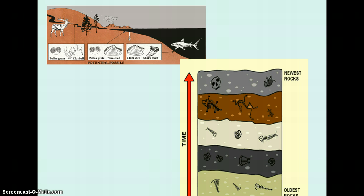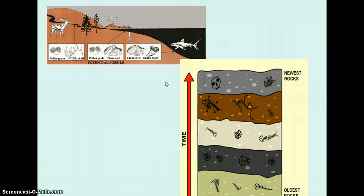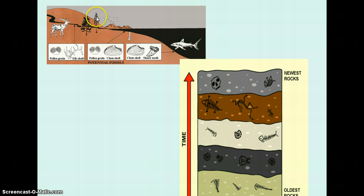These diagrams show that the deepest rocks have the oldest fossils, usually more simple than those closer to the surface. You can also use the type of fossils found to determine the environment at the time. For example, clamshells and shark teeth indicate a marine or coastal environment, while pollen grains and clamshells suggest farther inland, and pollen grains with elk skulls indicate even further inland.